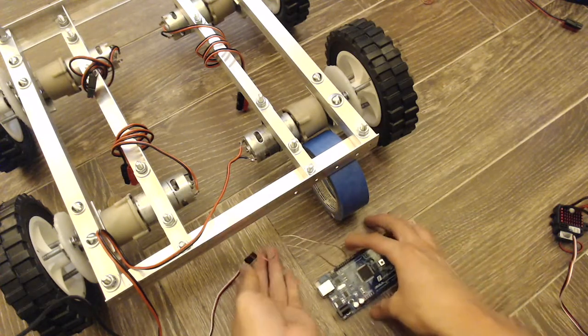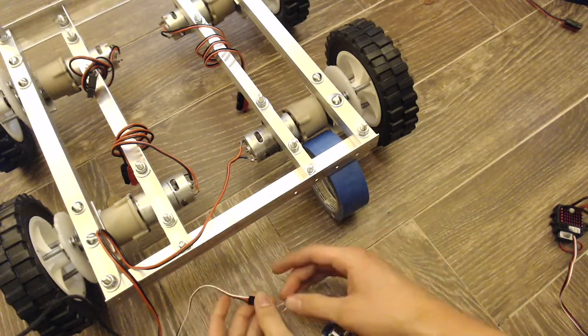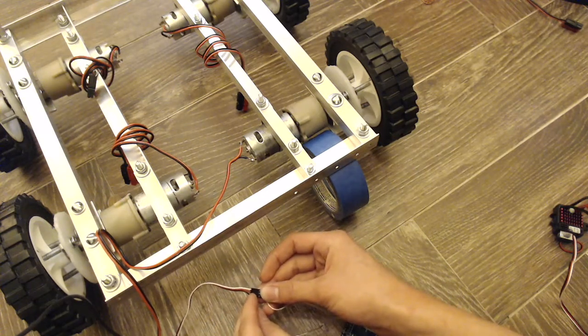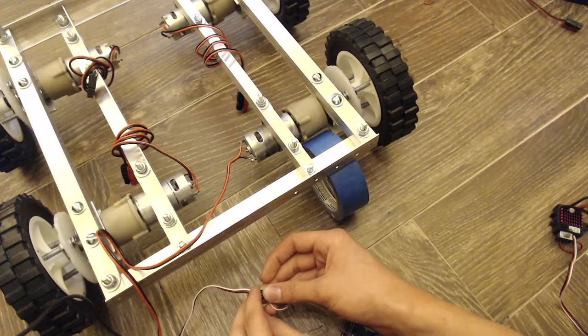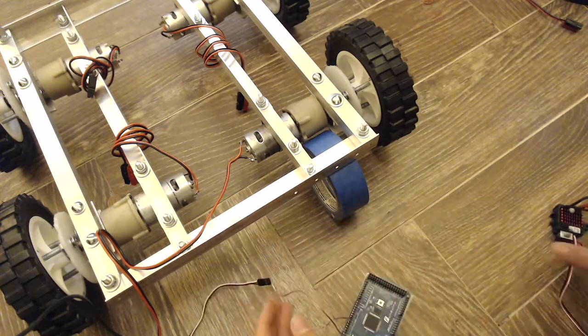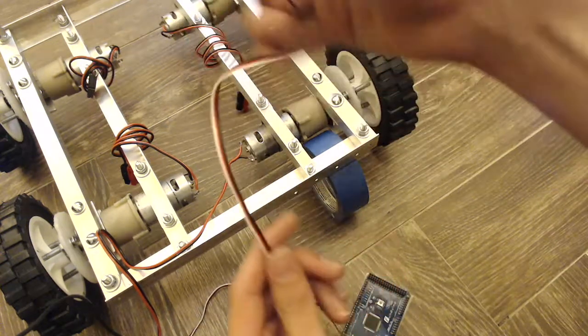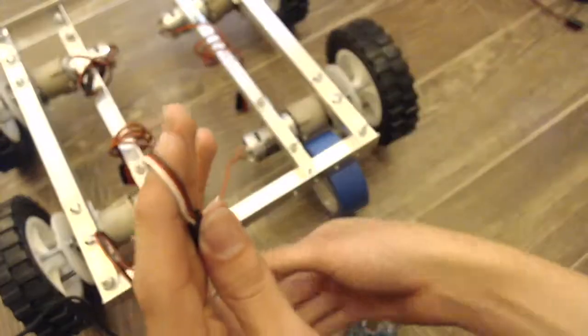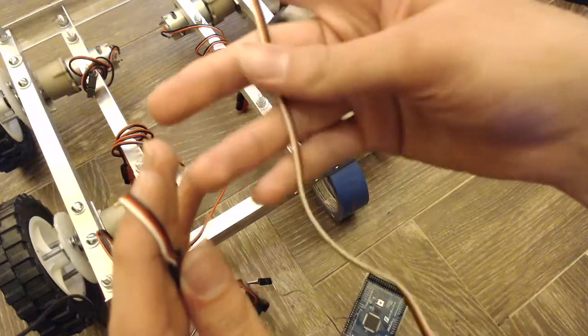But one thing you may notice is that when you wire one of these things, you plug the black wire and the white wire into the Arduino. So to give a better example, this is the cable for motor controller and this is a cable for a servo, and they're effectively the same.